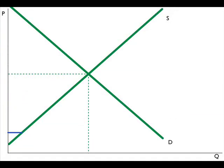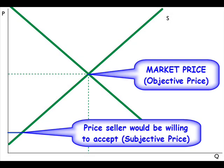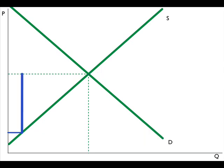As long as the market price, the objective price, is higher than the seller's subjective price, then the seller realizes a producer surplus.